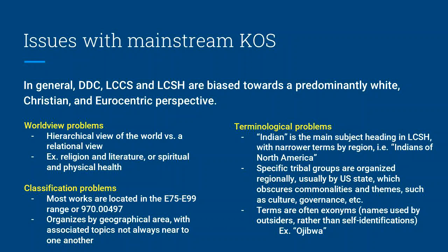Then there are also the terminological issues. For instance, Indian is the main subject heading in LCSH, and this is narrowed by geographical area, such as Indians of North America. Specific tribal nations are organized regionally as subdivisions by U.S. state, even though these nations are not geographically confined to a single U.S. state. This also further obscures the commonalities that might exist between Indigenous groups, such as those between their culture, governance, and history. And lastly, the terms in LCSH are exonyms, or names that are used by outsiders rather than self-identifications. The classic example of this is the subject heading of Ojibwa, a term that is not used by self-identifying Indigenous peoples, who use Anishinaabe. In these many different ways, we can see how mainstream knowledge organizational systems are insufficient for these Indigenous peoples.